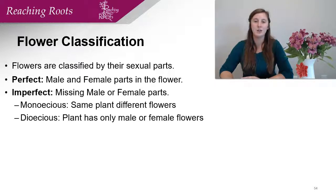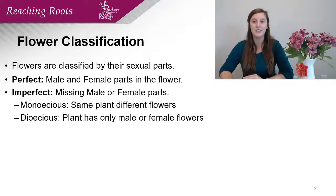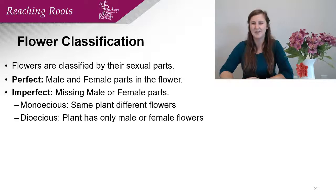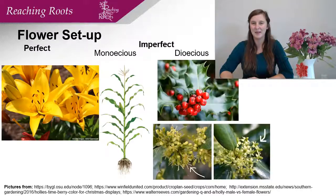The first is monoecious, which means that that plant has male and female flowers, but they're in different locations. Dioecious plants have male or female flowers on that particular plant.